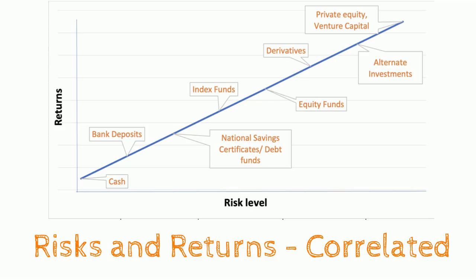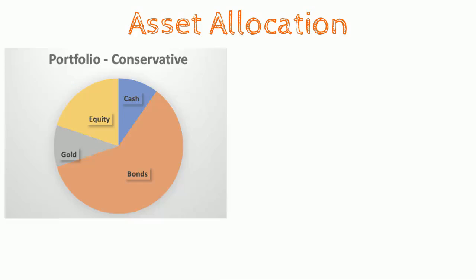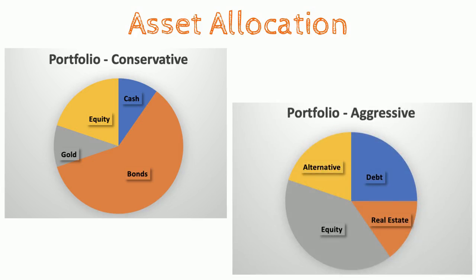As an investor, you obviously cannot eliminate the portfolio risk, but you can take steps to manage it or mitigate it. Use the asset allocation strategy to divide your portfolio across various asset classes to reduce risk and maximize returns. Here are some sample asset allocations. This is a conservative portfolio where the portion of debt investments is more than the equity investments. And this is an aggressive portfolio aimed at earning higher returns, but also higher risks.